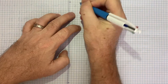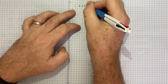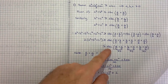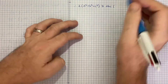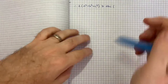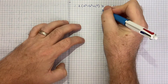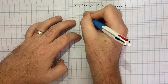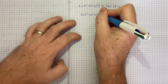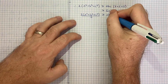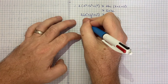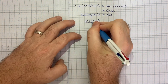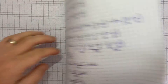Therefore, picking up from 2(a³ + b³ + c³) ≥ abc · (2 + 2 + 2), we get 2(a³ + b³ + c³) ≥ 6abc. Dividing both sides by 6 gives (a³ + b³ + c³) / 3 ≥ abc, which is exactly what we were asked to show.